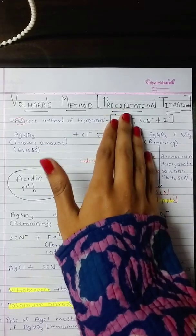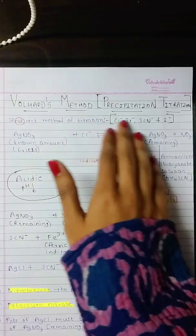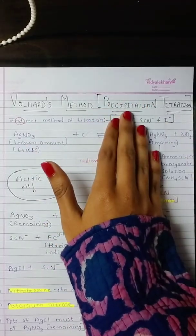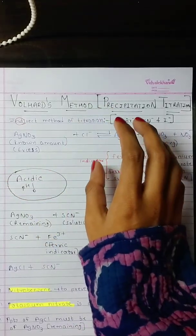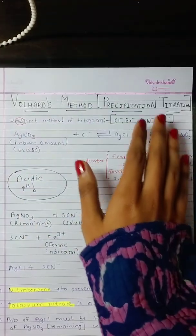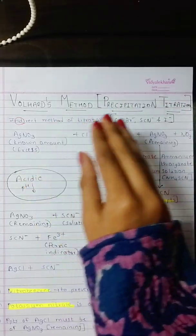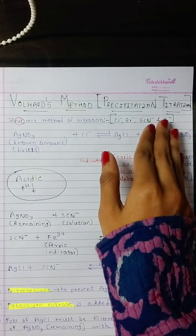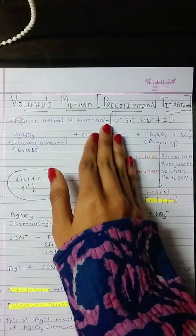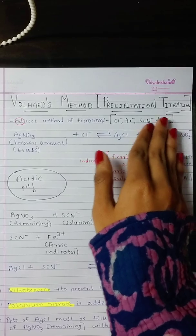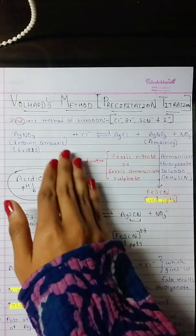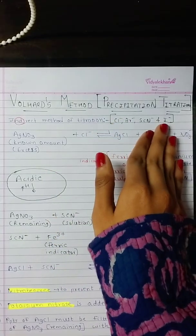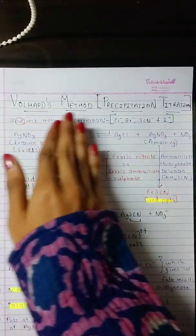The name itself suggests what precipitation titration is. Here, we will be using precipitation as an endpoint to determine the concentration of ions. Titration is used to determine the concentration of ions like chloride, bromide, SCN⁻, and I⁻ — that is, monovalent ions in the case of precipitation titration. To determine the concentration of these ions, precipitation titration like Volhard's method is used.